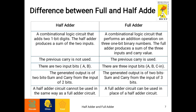Since 3 bits are used as inputs in a full adder, the generated output is 2 bits — sum and carry — from the input of 3 bits. A half adder circuit cannot be used in the same way as a full adder circuit, but a full adder circuit can be used in place of a half adder circuit.